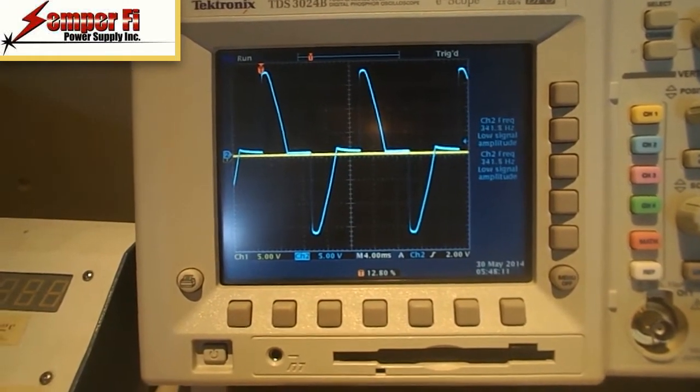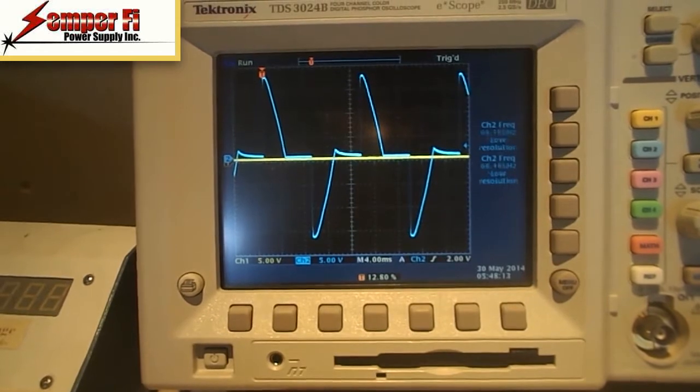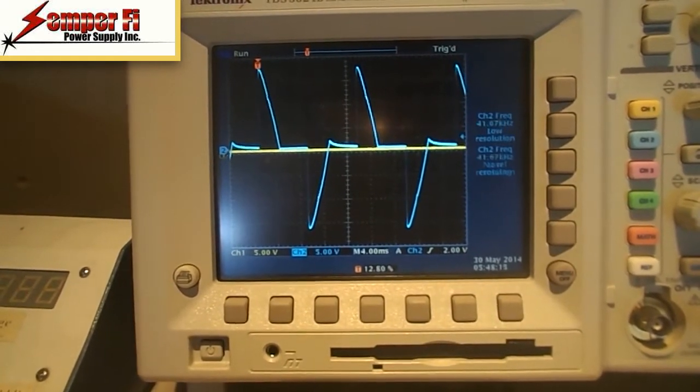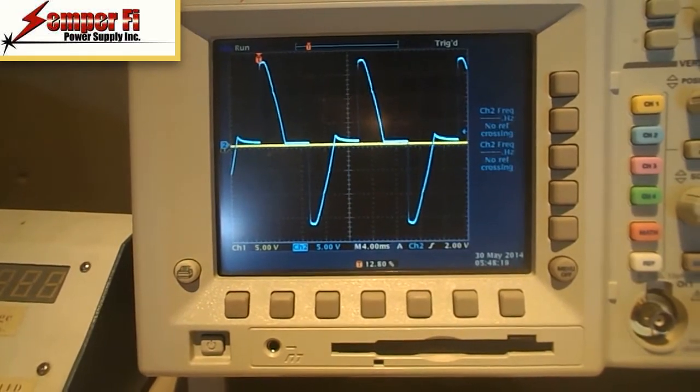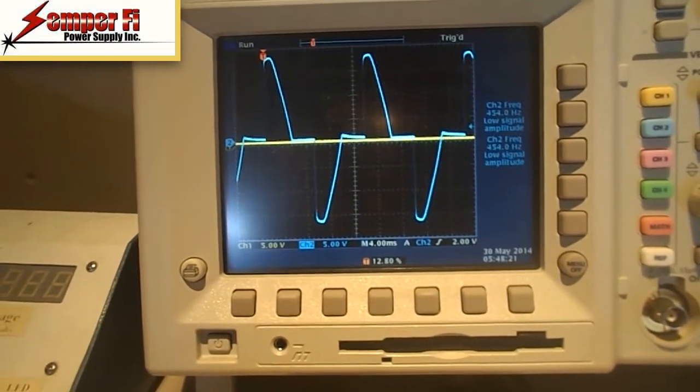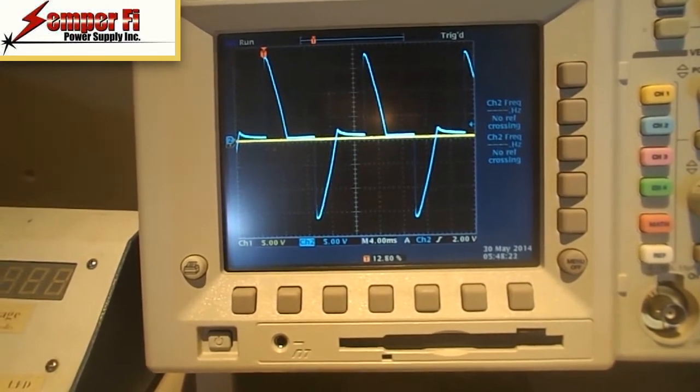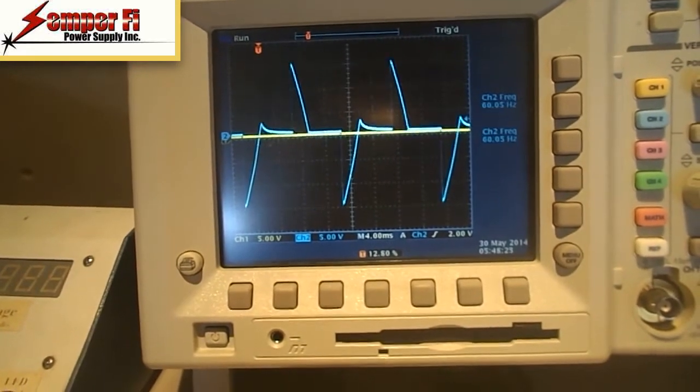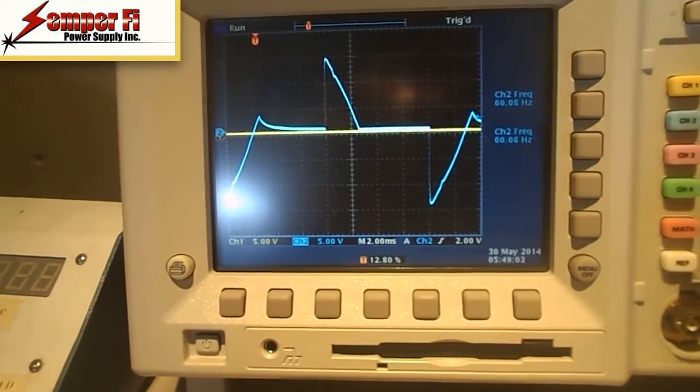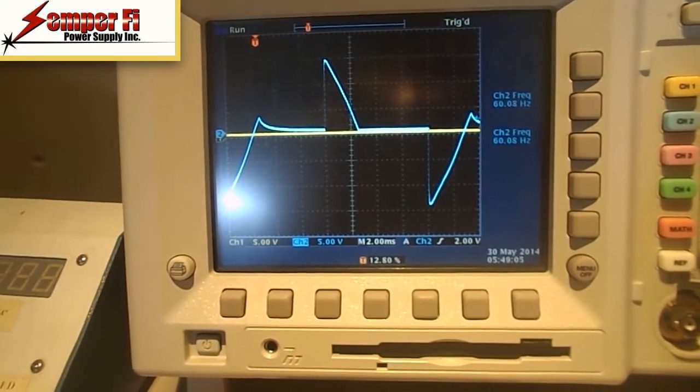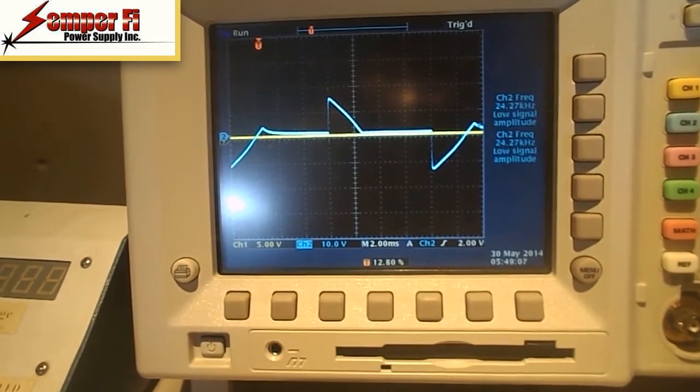When it's up towards full bright, doesn't cause a lot of problems. But then as the dimmer kicks in, you can see that the waveform is changing. When the waveform changes, that basically introduces noise onto the line, and you can see that that doesn't look anything like a normal waveform.